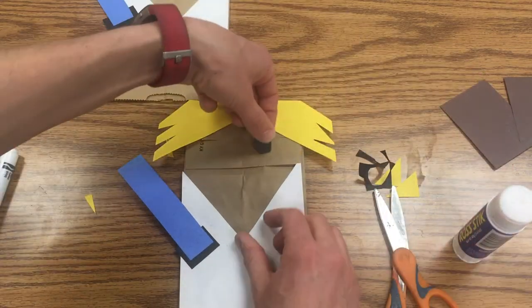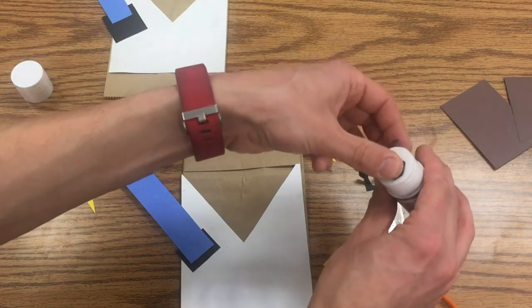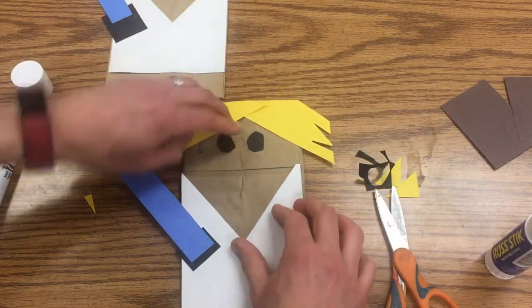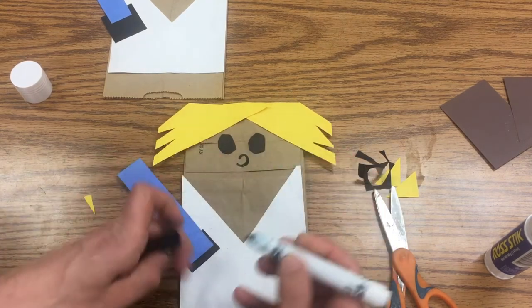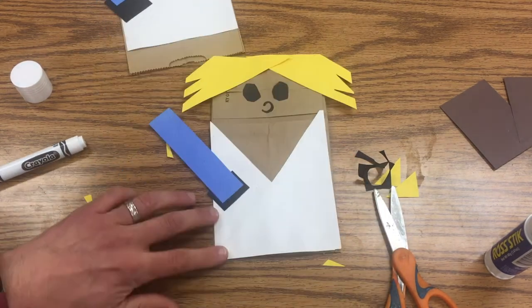Then I take a black marker and give a little backwards C for his nose, and there he is.